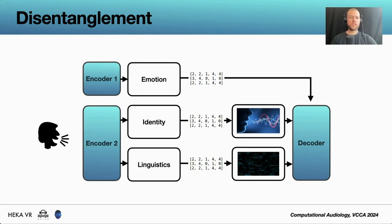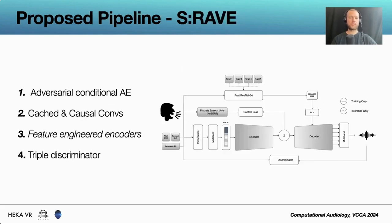We do this and end up with what we call the speech RAVE or S:RAVE, which is an adversarial conditional autoencoder that is built exclusively on cached and causal convolutions. These convolutions only use information from the past when processing the data, which allows us to work in real-time and in a streamable fashion.